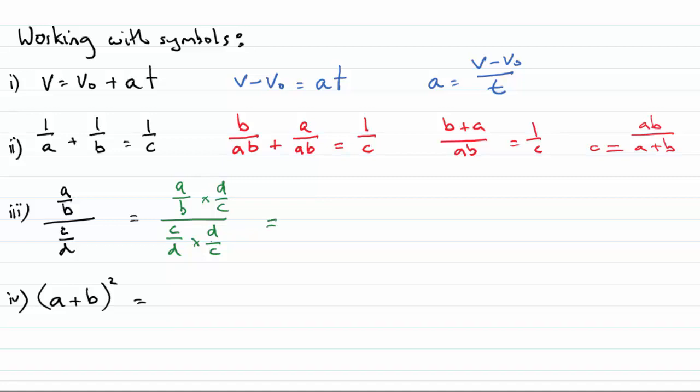That allows me to do a little bit of simplification here—the d's cancel here, the c's cancel, and now I've got ad divided by bc, which is a little bit easier to handle.